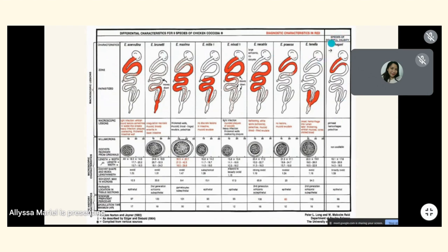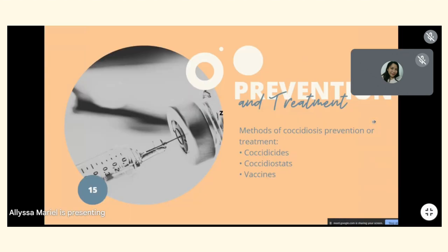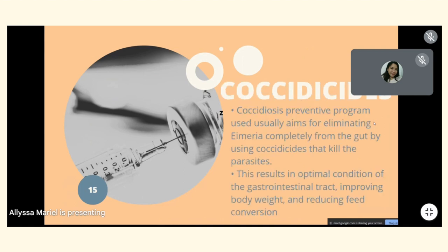For prevention and treatment, there are three methods: coccidicides, coccidiostats, and vaccines. Coccidicides are used in preventive programs aiming to eliminate Eimeria completely from the gut by killing the parasites. This results in optimal condition of the gastrointestinal tract, improving body weight and reducing feed conversion.